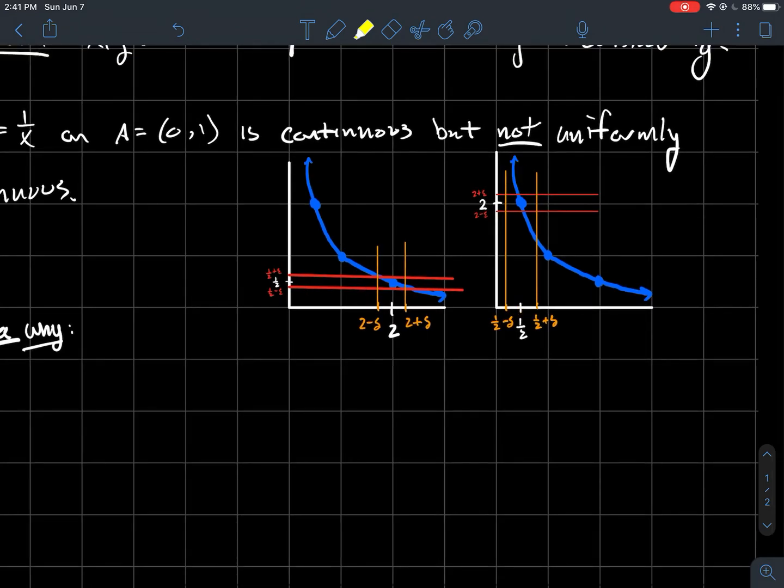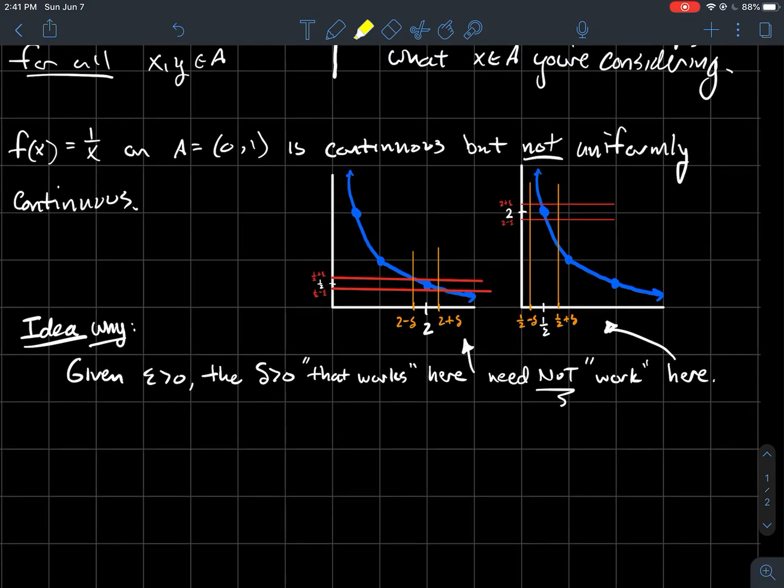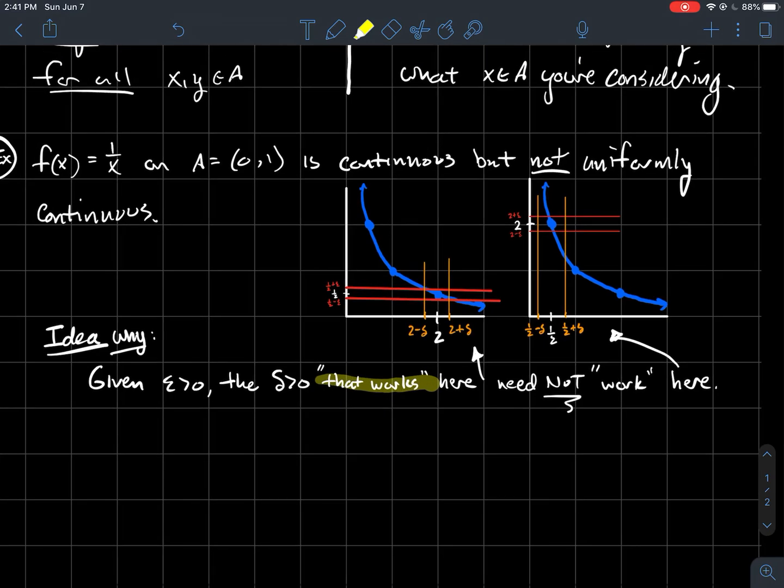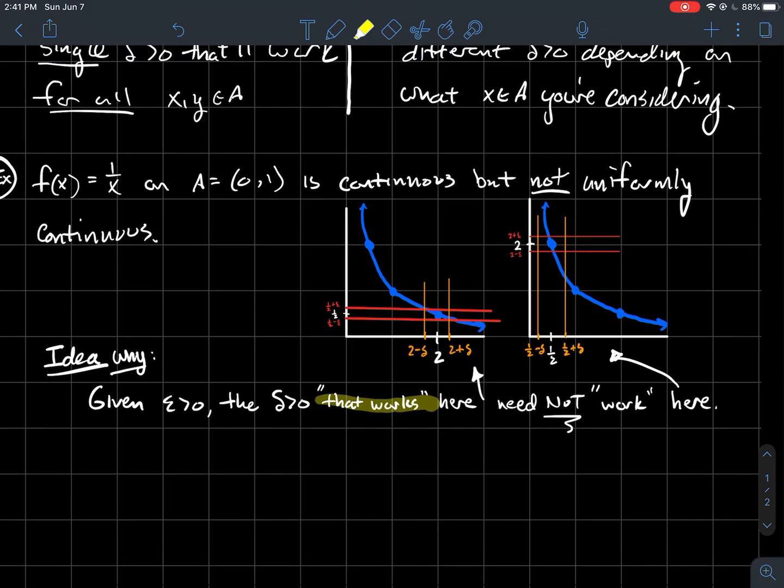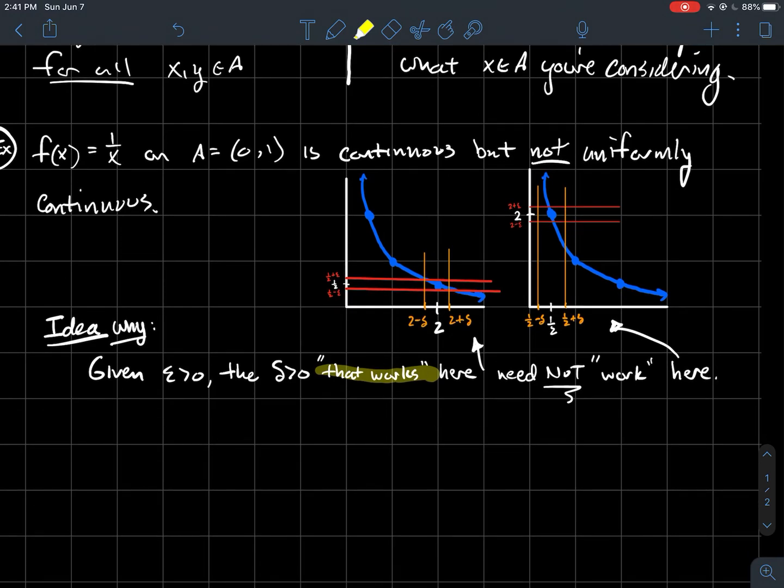So maybe to sum it up one more time, given an epsilon, the delta that works over here, and when I say that works, I mean that satisfies the definition of uniform continuity, that delta no longer works once I look at the picture on the right.